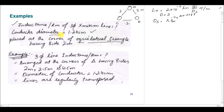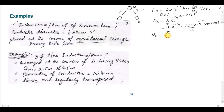The radius of the conductor is found from the diameter: Ds = (D/2) × e^(−1/4) = (1.24 × 10⁻² / 2) × 0.778. Therefore, Ds = 4.83 × 10⁻³ meters.